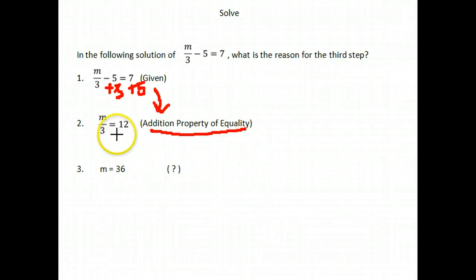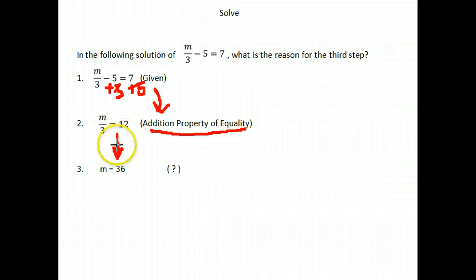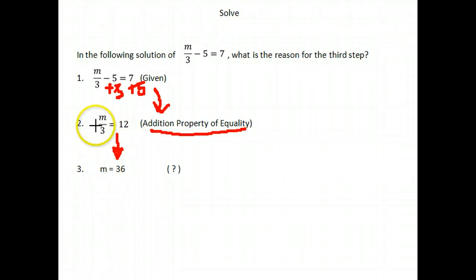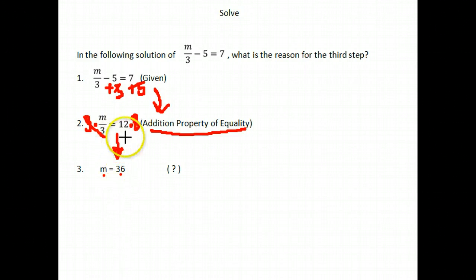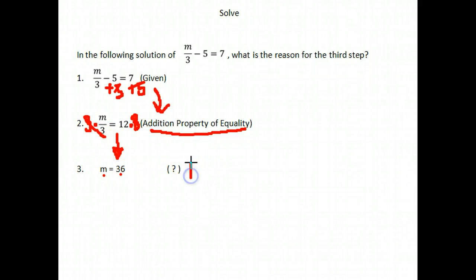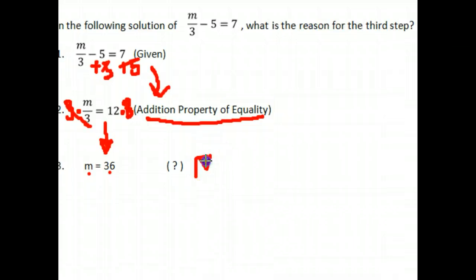The next step: what happened from step two to step three? Our job is to write down the justification — the why. We had m divided by 3, and logically the next thing we would do is get rid of the division by using multiplication. So we multiplied both sides of the equation by 3, which canceled here and left us with m equals 36. Our justification — why we can multiply both sides by the same number — is the multiplication property of equality.